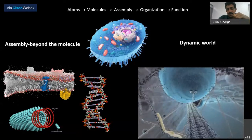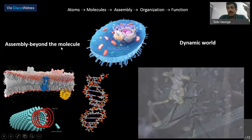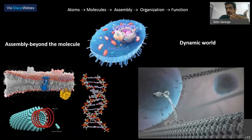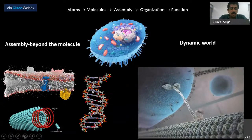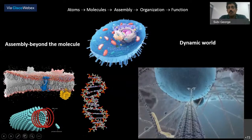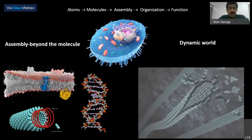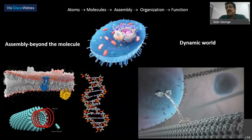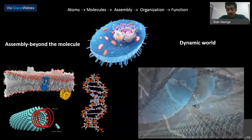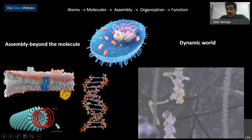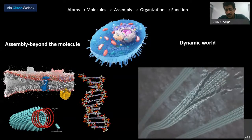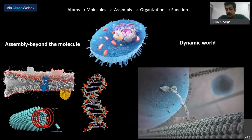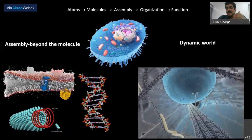Two important structural aspects stand out when looking at cell function. First, most of the time it is not a single molecule performing a function — it is always an assembly of molecules performing that function. Cell membranes, DNA, and protein assemblies are all highly ordered arrangements of molecules held together by very weak, non-covalent interactions like hydrogen bonding, pi-pi stacking, and hydrophobic interactions. Second, if you look into the cell — as illustrated in a famous Harvard University animation, 'Inner Life of a Cell' — these functions are always highly dynamic.